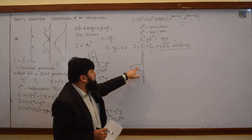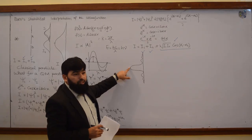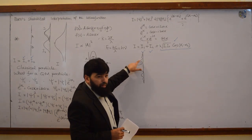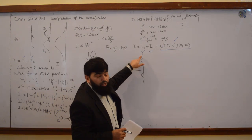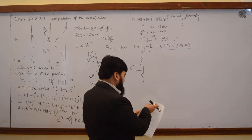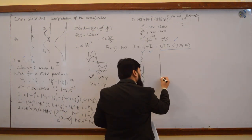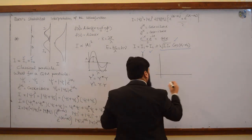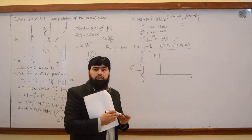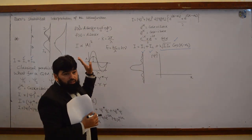Their distribution will be somehow like this. The particles will be here the most — the maximum probability is here. Then at this point the probability is 0, and then another probability comes in and decreases, and so on. So we have a distribution of the particles like this. If we plot x here and |ψ|² here, |ψ|² is the probability density. ψ is the wave function.